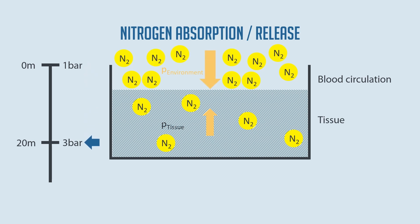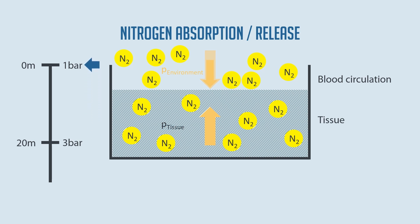When we submerge, the pressure on us increases. We breathe in our breathing gas at ambient pressure, which is why the pressure in the bloodstream increases. The balance is now disturbed — there is increased pressure in the bloodstream — and equalization is sought, whereby the nitrogen is transferred to the tissues until equilibrium is restored.